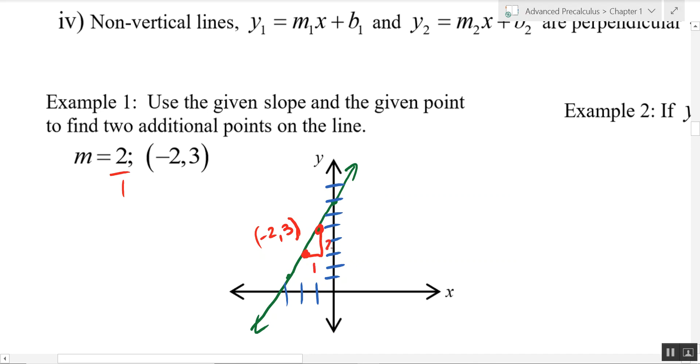That's over 1, up 2. And it looks like that new point is going to be negative 1, 5. We could continue doing this, we could go over 1, up 2. This new point would be 0, 7. Or we could have gone the other way, could have gone down 2 over 1. And we would have been at the point negative 3, 1. But that would be the graphical approach to that.